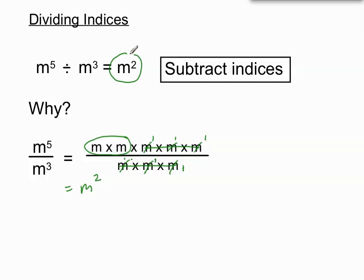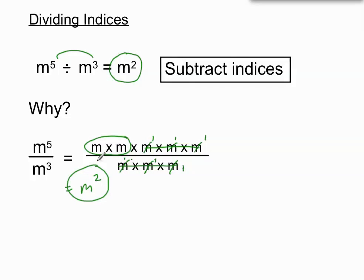So that illustrates our rule. We got m squared up the top by subtracting — taking 5 minus 3 and getting the rule. That's the shortcut. If we wrote them both out in an expanded way and did our cancelling carefully, we would discover that m times m are our remaining terms. I just wanted to show you in expanded form that the rule actually works and it does make sense mathematically.